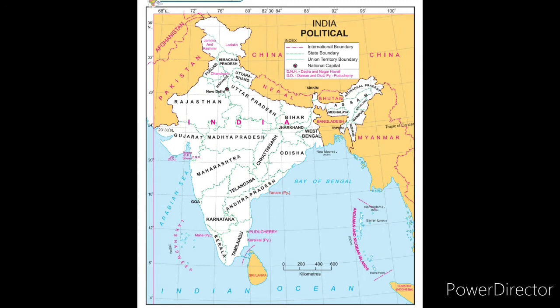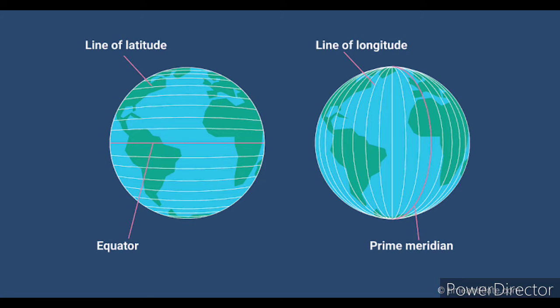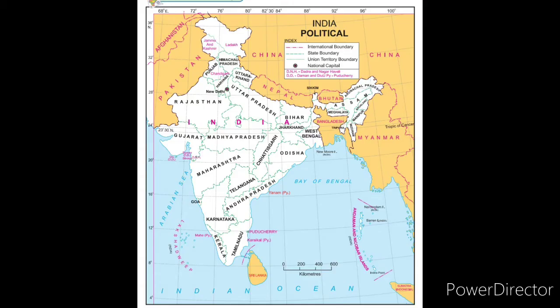If we look at this map, we can completely see the extent of the mainland of India. The mainland means if we leave out the islands — for example Lakshadweep or Andaman — and focus on the main India, that is what we will look at. Before understanding the extent of India, we should understand what longitude and latitude are. Latitude refers to all the imaginary horizontal lines on the map of the world, while longitude refers to all the imaginary vertical lines on the map.